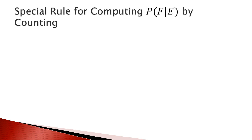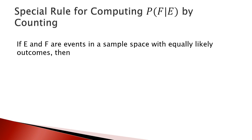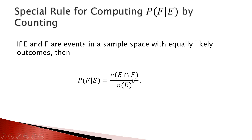We talked about a special rule for computing the probability of F given E by counting. If E and F are events in a sample space with equally likely outcomes, then the probability of F given E can be written as the number of elements in E intersection F over the number of elements in E.